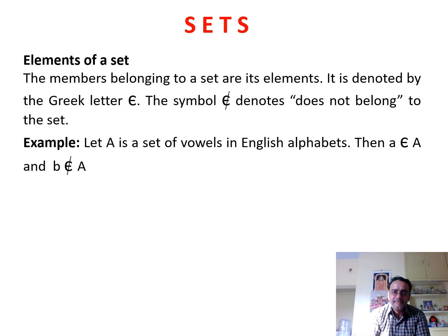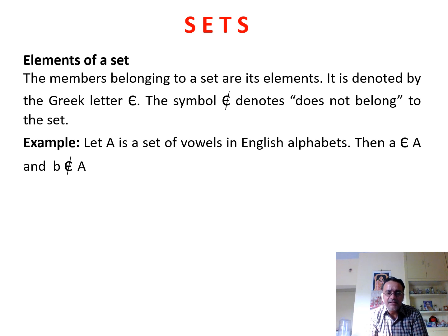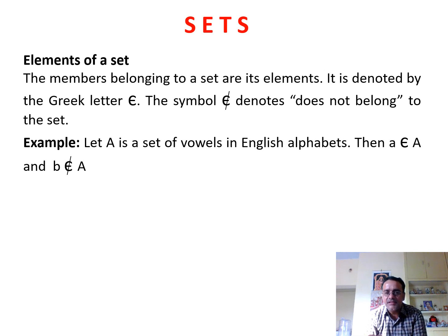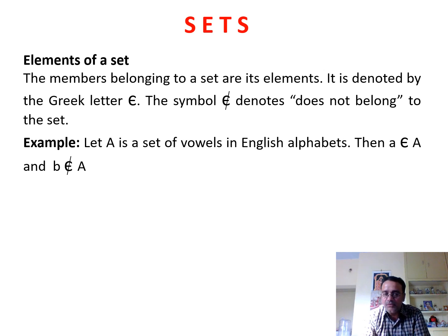The next topic is elements of a set. All members which belong to a particular set are called the elements of that set. It is denoted by the Greek letter epsilon, and if we put a cross through it, it denotes 'does not belong to.' For example, let A be the set of vowels in English alphabets, so it contains five elements: A, E, I, O, U.